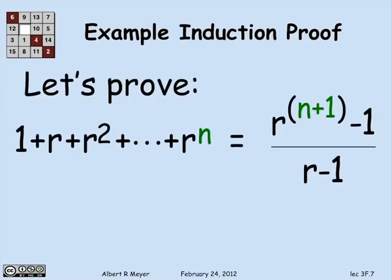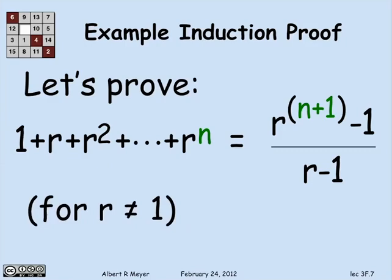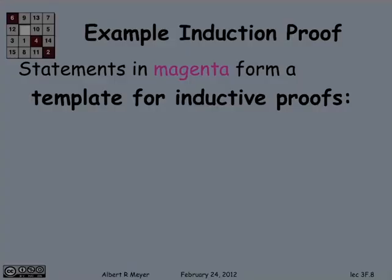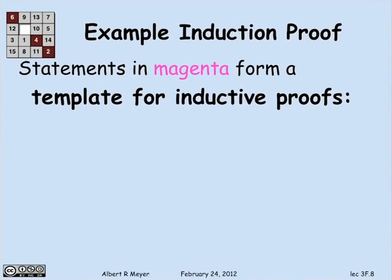Maybe one of the most basic and standard applications would be to prove a numerical identity. Let's prove one we've actually seen before — one we previously proved using the well-ordering principle — for a geometric sum: the sum of r to the 0, r to the 1, up to r to the n. The claim is that equals r to the n+1 minus 1, divided by r minus 1. This only works if r is not 1. I'm going to do the proof and show you a standard template for induction proofs at the same time.